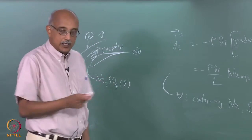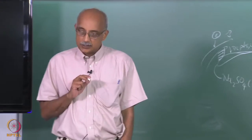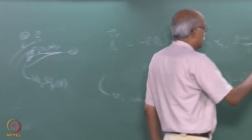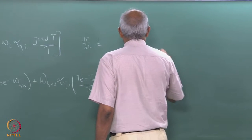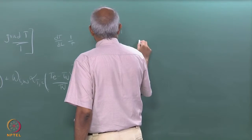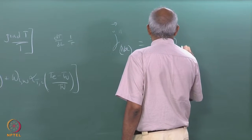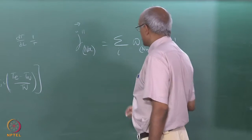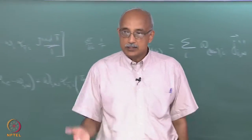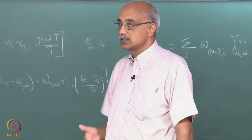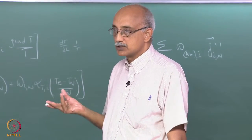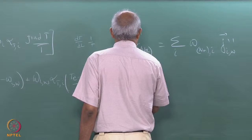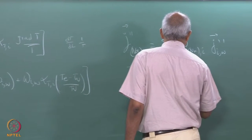Once you have the diffusive fluxes for each species containing these elements, the next step is to write the diffusive flux for the element sodium, which will be a summation over all i of ω_{Na,i} × J_i″. In other words, the diffusive flux of the element sodium will be a weighted sum of the diffusive fluxes of all species containing sodium, with the weighting factor simply being the mass fraction of the sodium element in each species. Similarly you write J_S″ = Σ_i ω_{S,i} × J_i″.